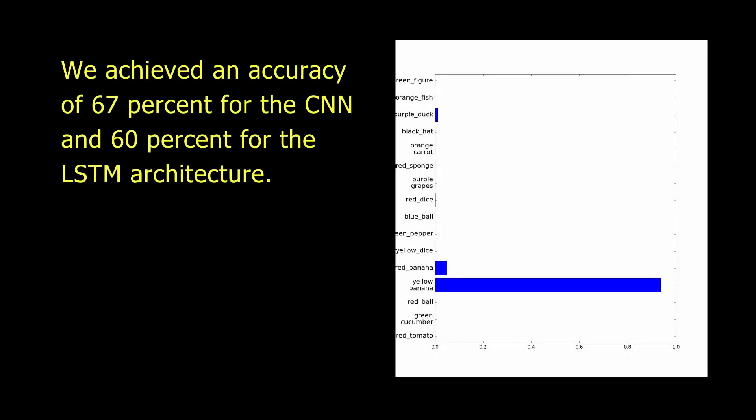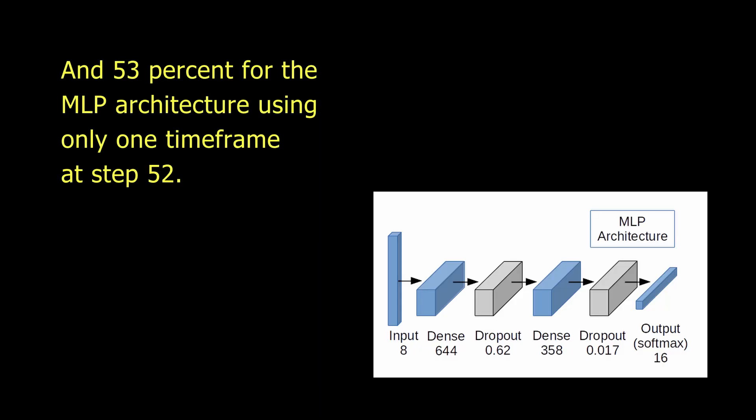With an accuracy of 67% for the CNN, and 60% for the LSTM architecture, and 53% for the MLP architecture using only one time frame of 52.